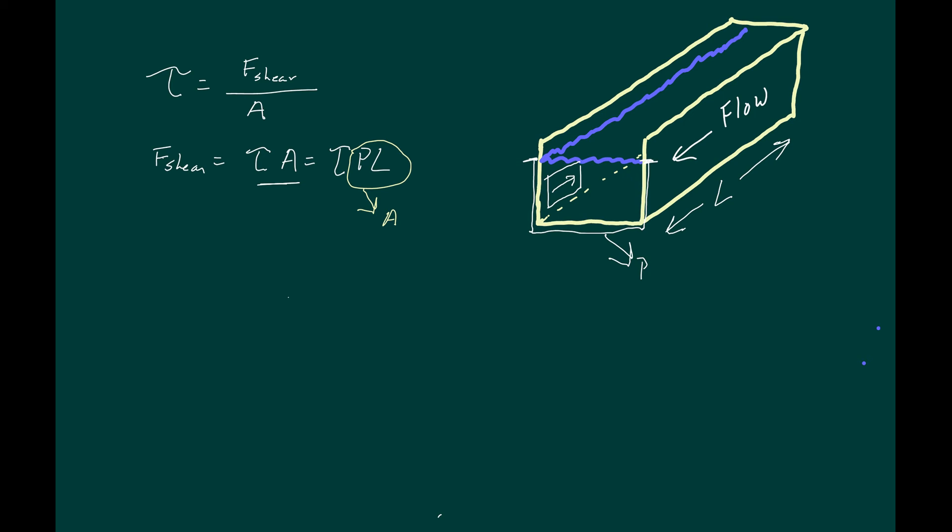In a section of channel having steady flow or constant mean velocity the shear force, tau times wetted perimeter times length, exactly balances the F sub net or the component of gravity pulling the water down the channel.